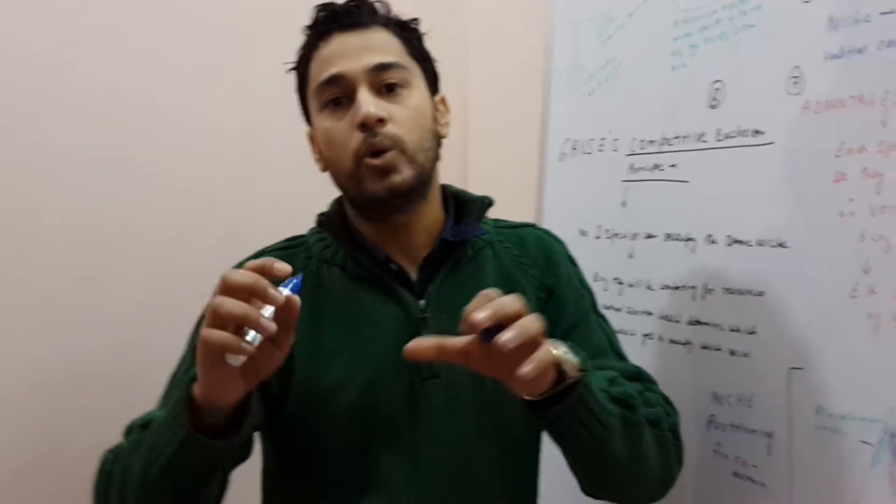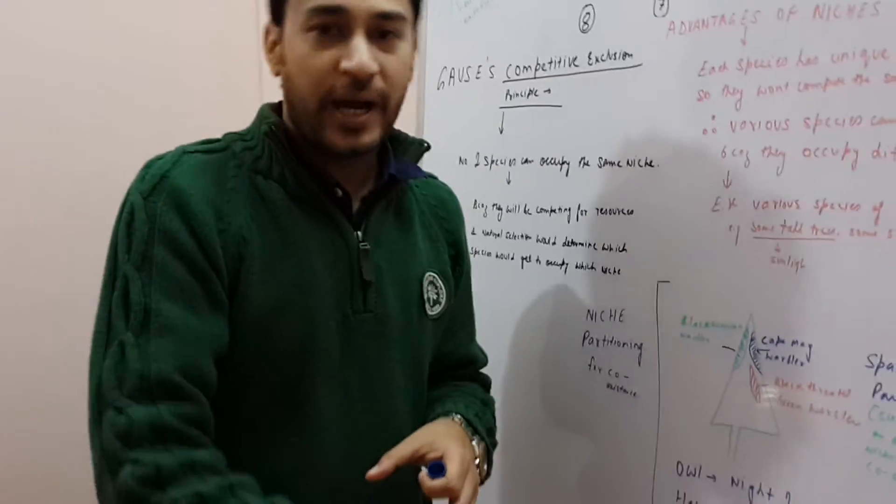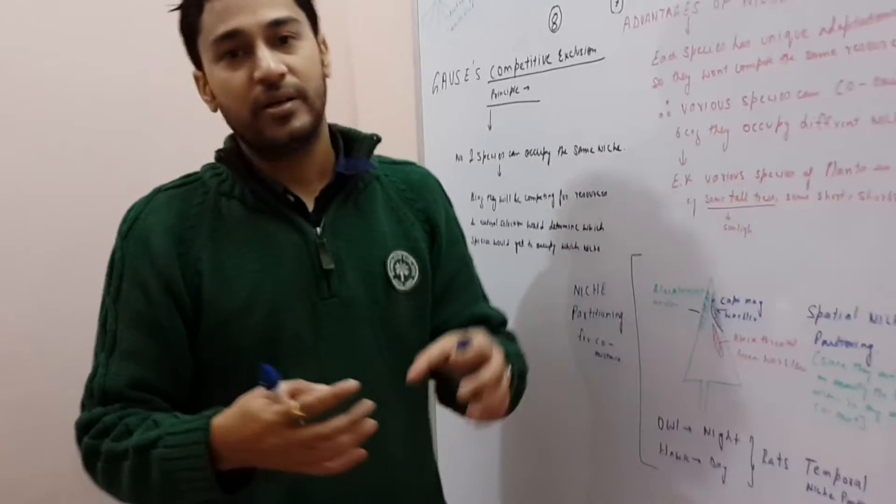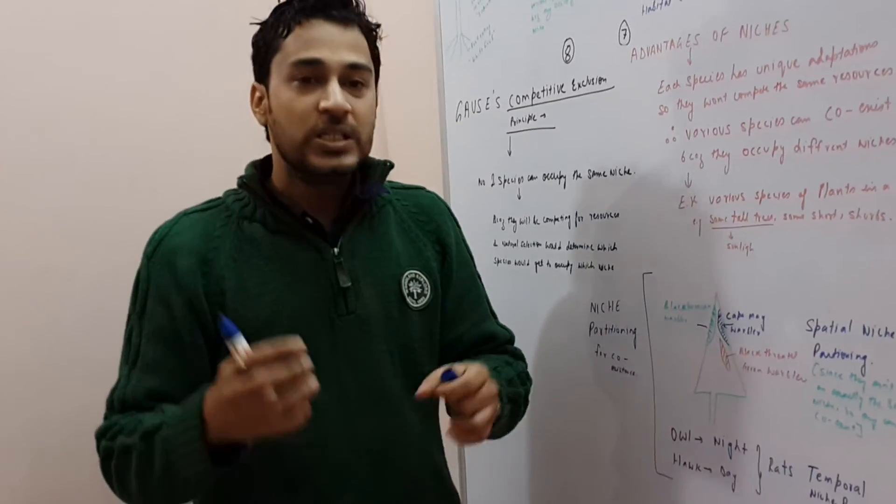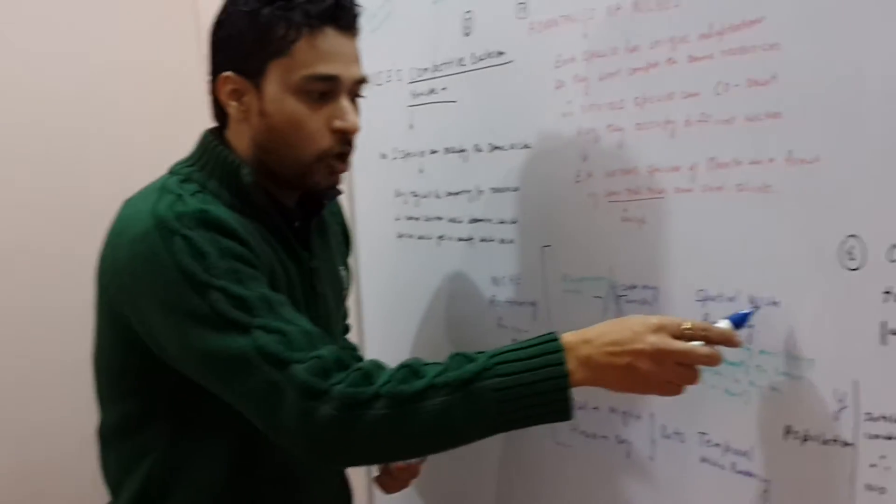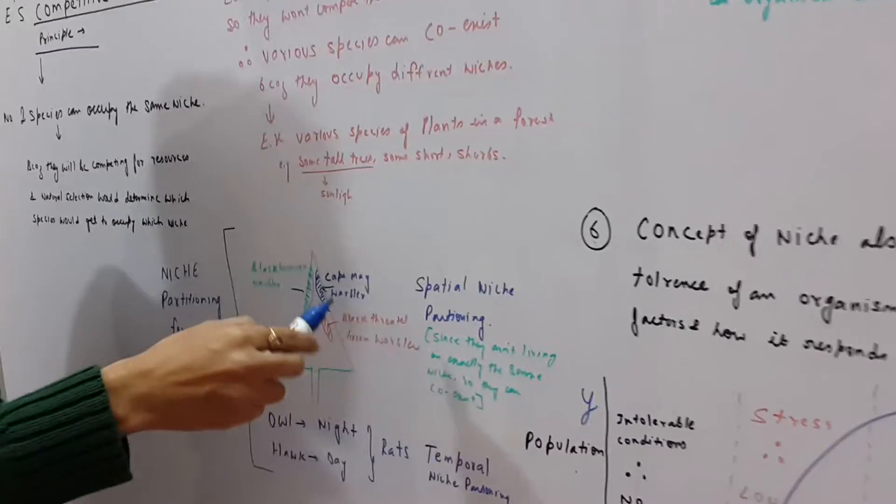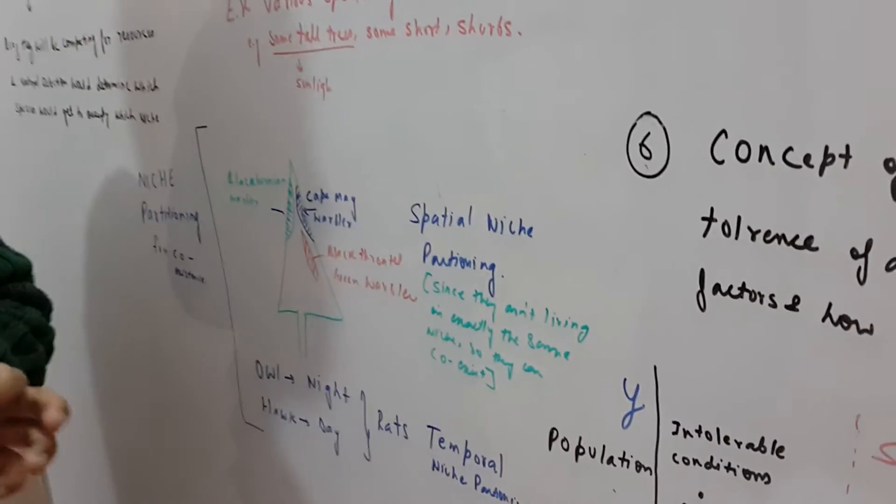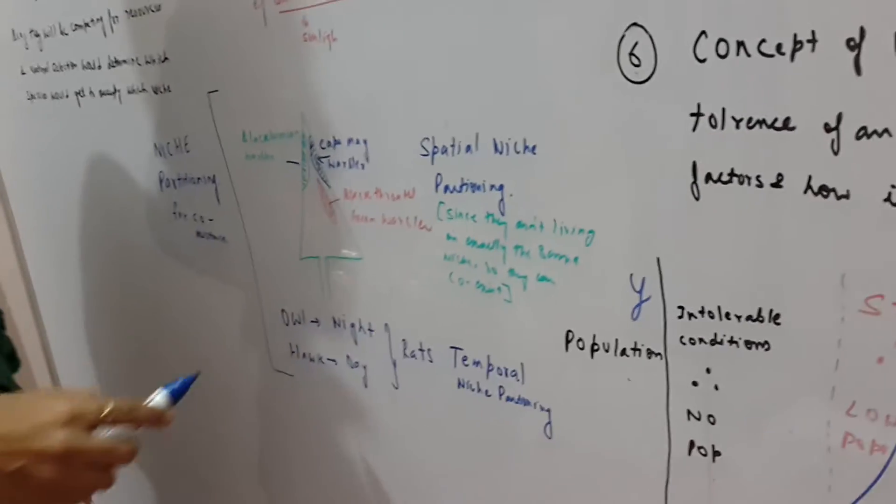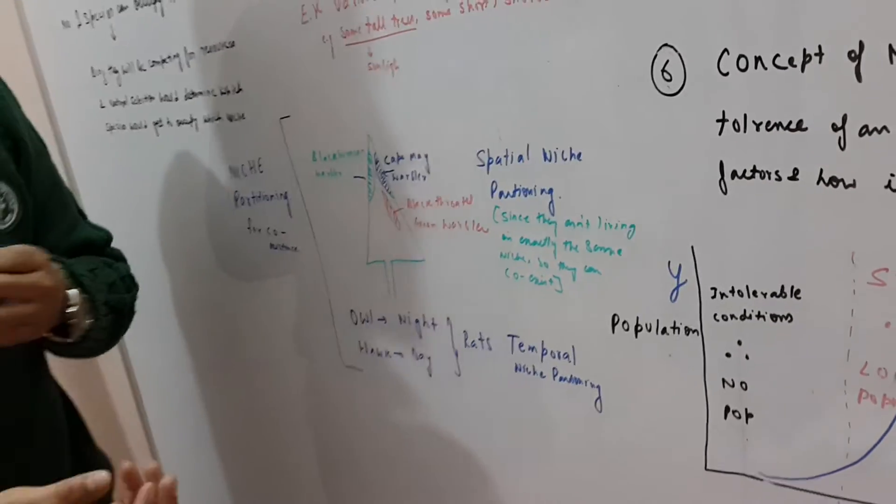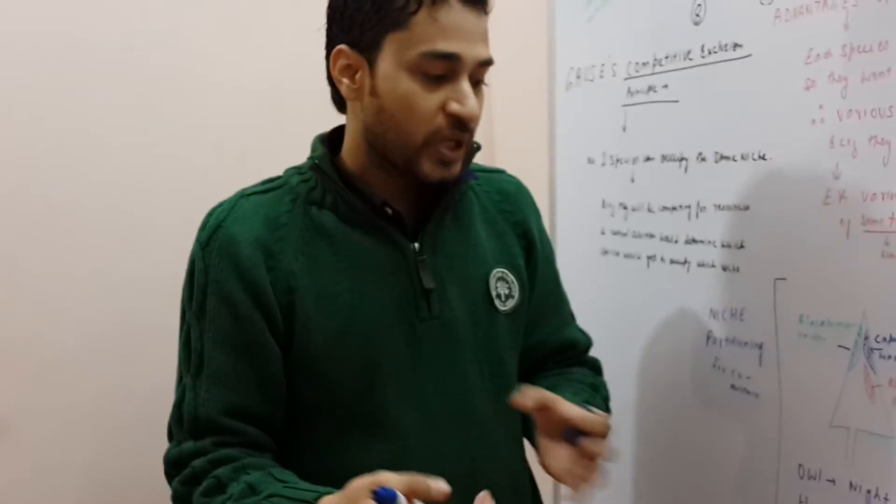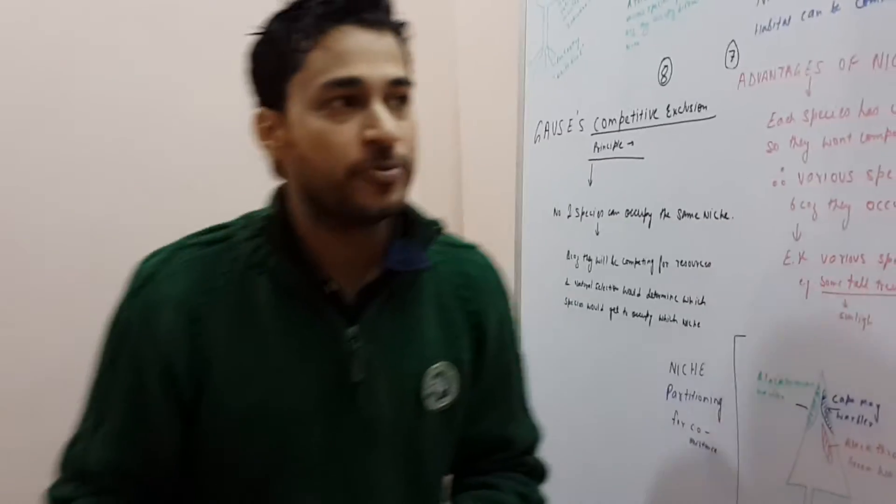A very good example also is like owls would hunt during the night and hawks would hunt during the day. So now, this example can be called spatial niche partitioning, which is about birds in a different tree, because they are occupying different spaces. And owls and hawks, they are working at different times, so this can be called temporal niche partitioning.